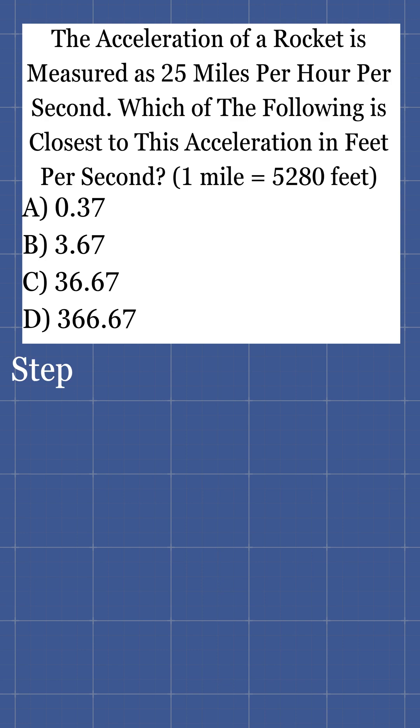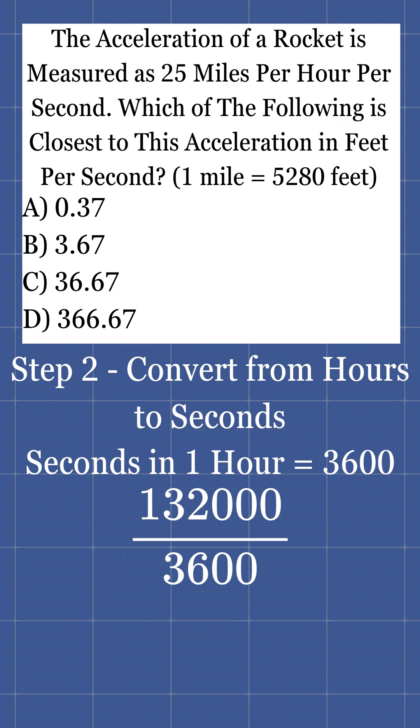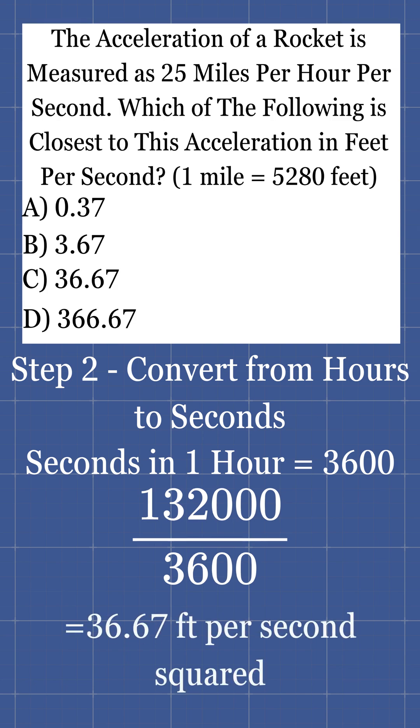Step two, now we need to get from hours to seconds because the answer needs to be in feet per second. There are 3,600 seconds in one hour, so we divide 132,000 by 3,600. That works out to about 36.67 feet per second squared.